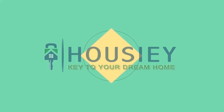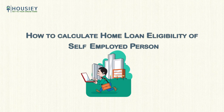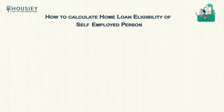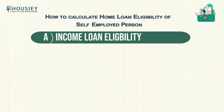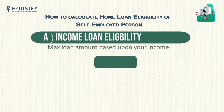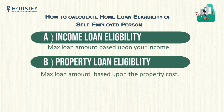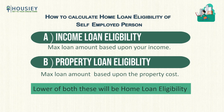Hello everyone, welcome to Housiey. Today we will be discussing the topic: how to calculate home loan eligibility for a self-employed person. Basically, home loan eligibility depends upon two factors. The first one is the income loan eligibility, which is the maximum loan amount based upon your income. The second one is the property loan eligibility, which is the maximum loan amount based upon the property cost. The lower of both these will be the home loan eligibility.